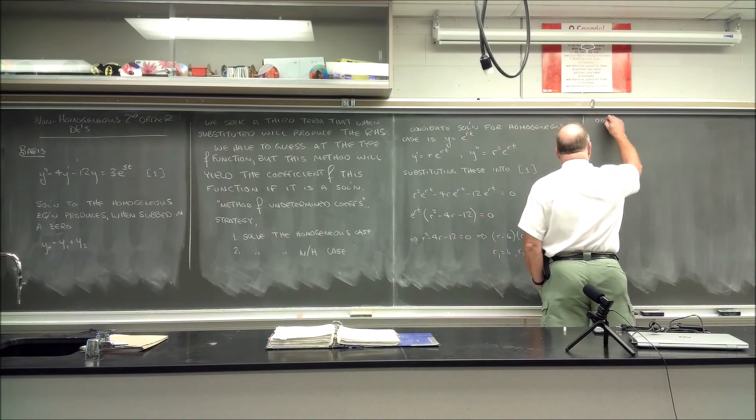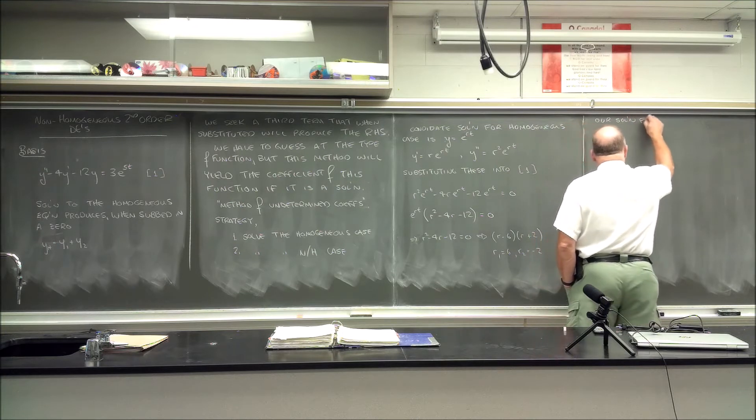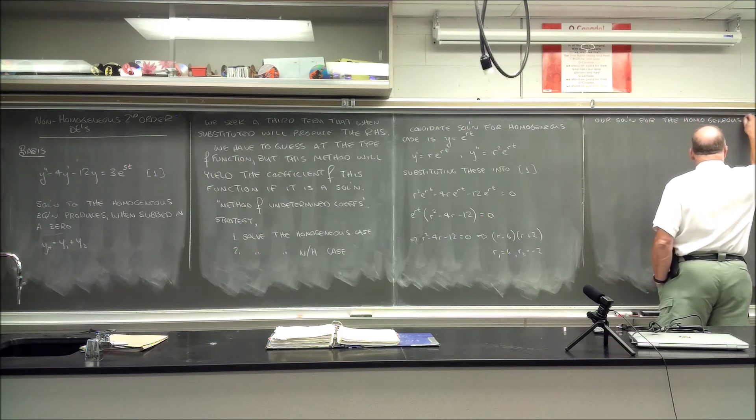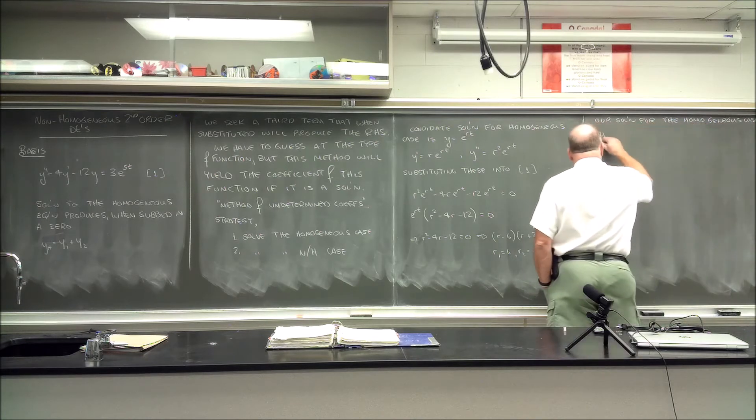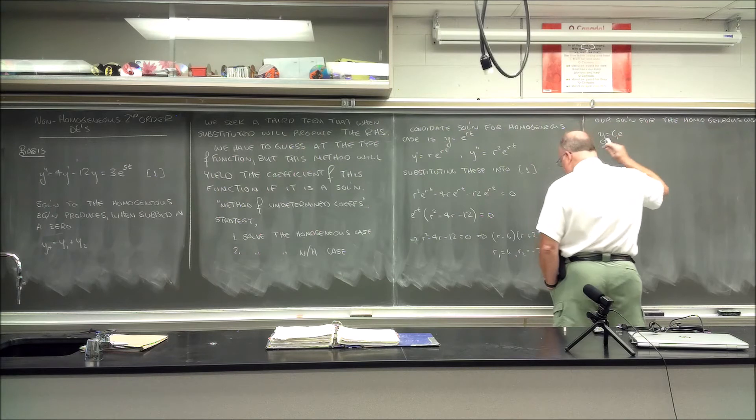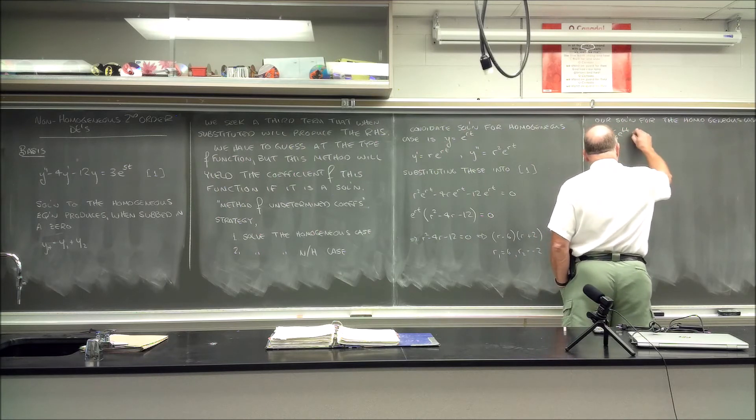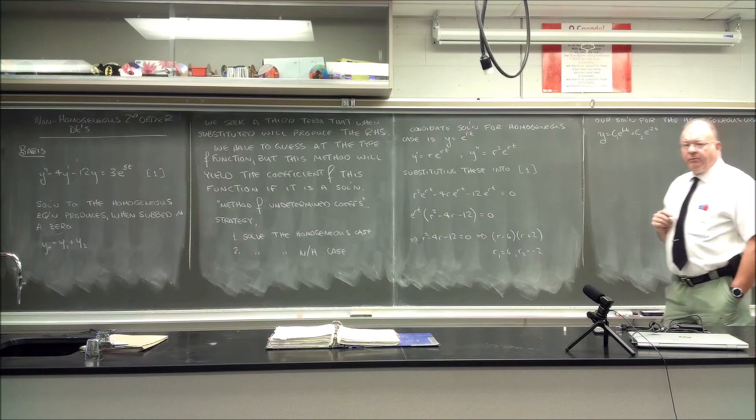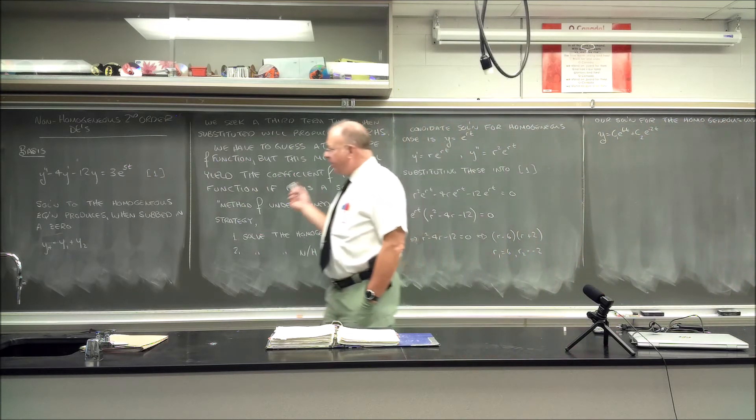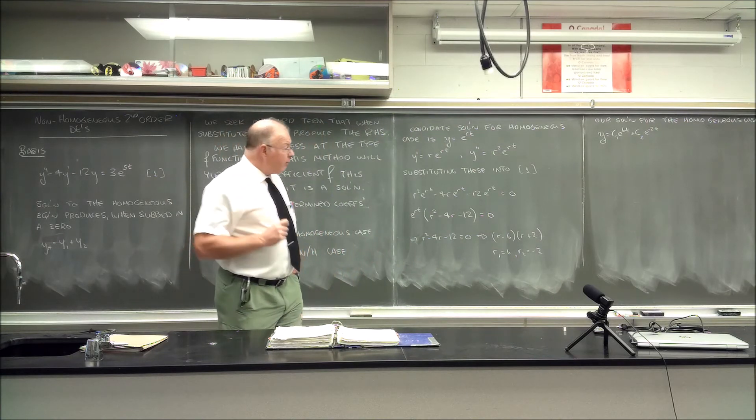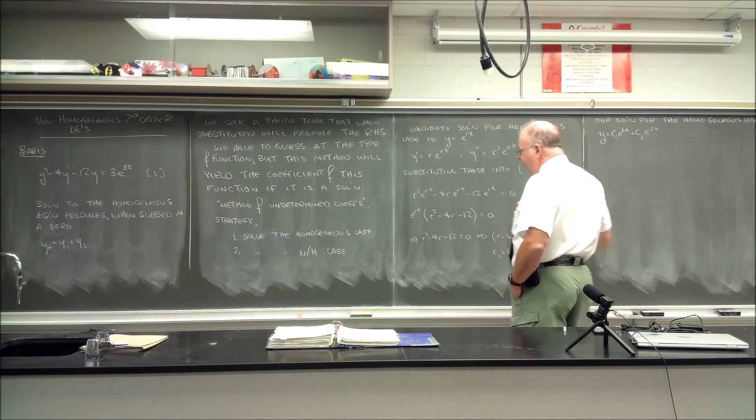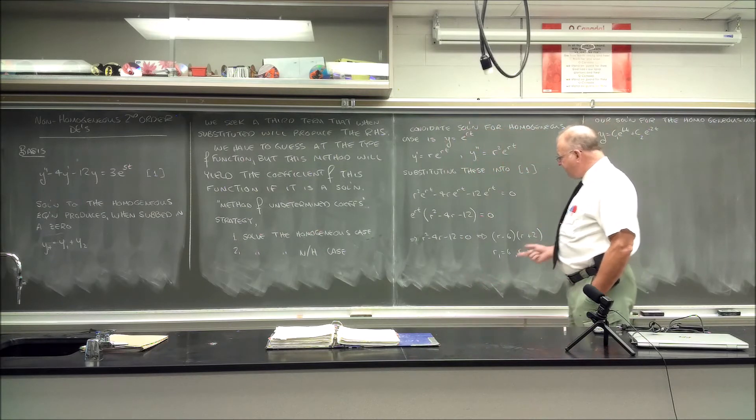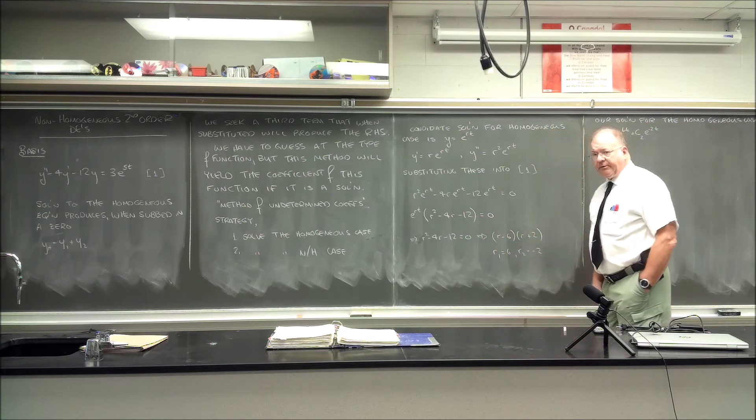So our solution then for the homogeneous case will be y is equal to c_1*e^(6t) plus c_2*e^(-2t). Now these constants are evaluated when the initial conditions are provided. We don't have any initial conditions here so we have only a general solution but that's alright. Okay so that was the finish then of the homogeneous case.